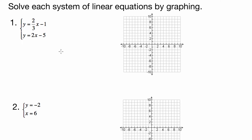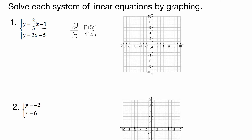In my opinion, the easiest way to graph a line is to start at the y-intercept, which is negative 1 for the first one, and then move with the slope. So this starts at negative 1 down here, and the slope is 2/3 — remember our slope is our rise over our run — so that means we are rising 2 and running 3.